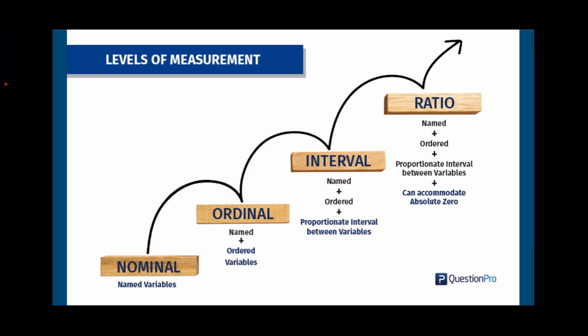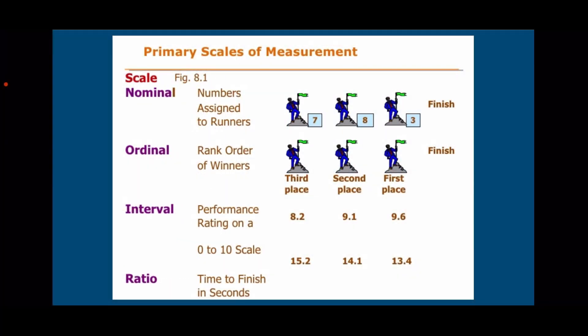Absolute zero means zero is defined as impossible. Let us summarize the four levels of measurement — nominal, ordinal, interval, and ratio — using a runner example. In nominal, the numbers assigned to the runners: 7, 8, and 3. In ordinal, the rank order of the winners: third place, second place, and first place. In interval, the performance rating on a 0–10 scale — runner 7 got 8.2, runner 8 got 9.1, runner 3 got 9.6 — where 0 on the scale means the performance is rated as zero but does not mean absolute absence. In ratio, the time to finish in seconds — runner 7 finished in 15.2 seconds, runner 8 in 14.1 seconds, runner 3 in 13.4 seconds.